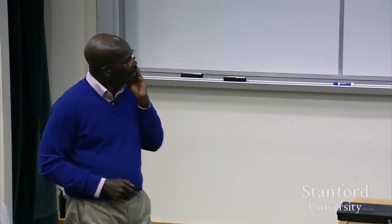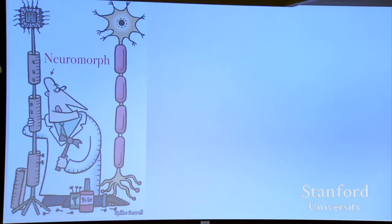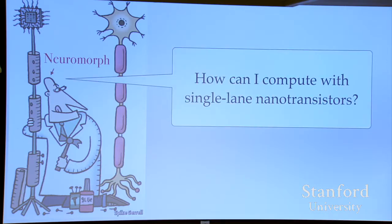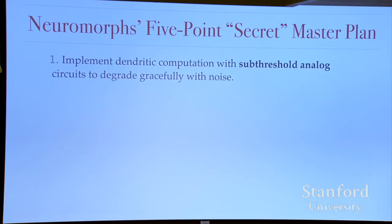How does the brain do this? This is what neuromorphic engineers are trying to figure out. We don't want a literal copy of the neuron — we want to understand the principles. At the highest level it's this combination of analog and digital. We want to translate those principles into working hardware, or basically find a way to compute with ultimately scaled transistors down to a single lane of electrons, switching stochastically just like an ion channel.